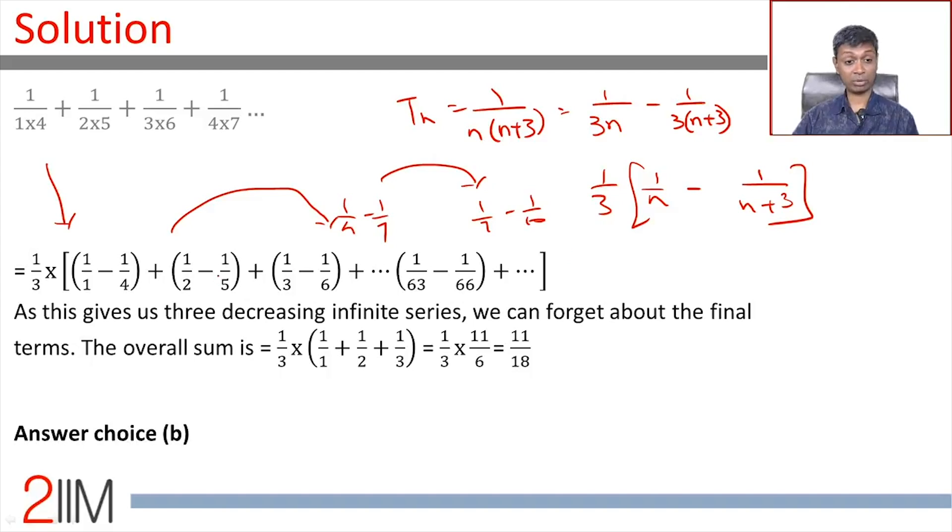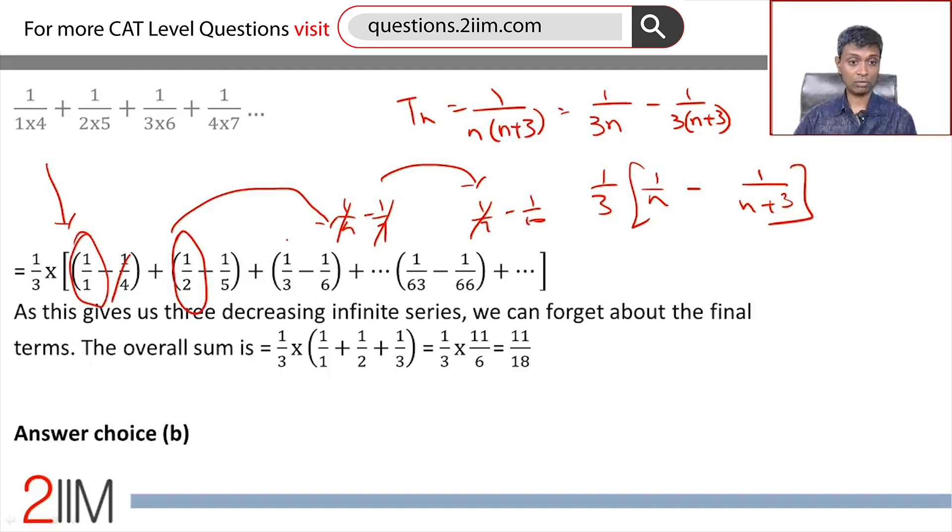Likewise, 1/2 - 1/5, we'll have 1/5 - 1/8. This will get cancelled with this, this will get cancelled with this. It's an infinite sequence. The last term is practically 0. So what will we be left with? We'll have 1/1, we'll have 1/2, we'll have 1/3. Everything else will disappear.